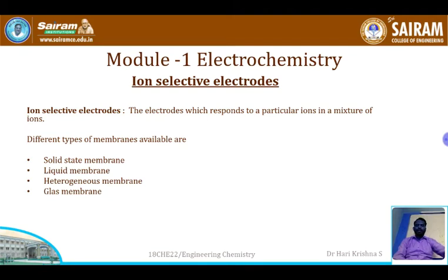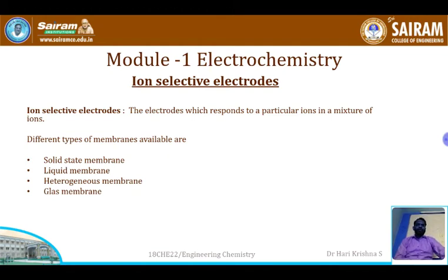Now, what are ion selective electrodes? Consider we have n number of ions — magnesium, chloride, fluoride, iodide, zinc, copper, and so on — but I want only the concentration of fluoride ion. How do we determine that? Using the classical volumetric estimation method, it is a tedious process.